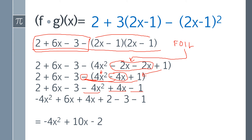Now we just rewrite this whole thing. We start with the x squared term. So we have negative 4x² plus 6x plus 4x plus 2 minus 3 minus 1. Combining the like terms: the negative 4x² doesn't have any like terms, so carry that down. Then 6x plus 4x is 10x. And 2 minus 3 minus 1 equals negative 2. So the answer is negative 4x² plus 10x minus 2.